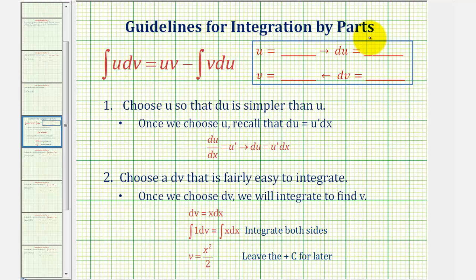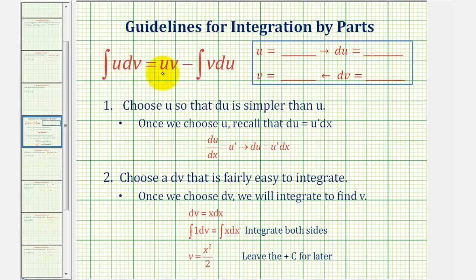Welcome to an example of integration by parts. Integration by parts is an integration technique used when the integrand is a product. The integration by parts formula is given here, where the given integral is the integral of u dv, which is equal to u times v minus the integral of v du.